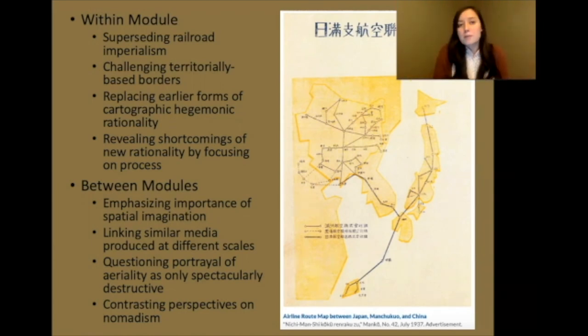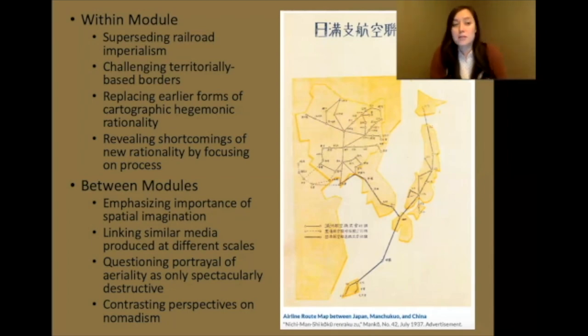The second issue I'm interested in is the ability to challenge territorially based borders within the Japanese Empire — airplanes actually go beyond what has been formally negotiated between various powers. Third, Japanese imperialists themselves sought to replace earlier forms of cartographic hegemonic rationality with this new form. This is not a module that intends to subvert norms, but a way to read new rationalities emerging at this time. And last, I'm interested in revealing the shortcomings of this new rationality by focusing on the process in which they were constructed.